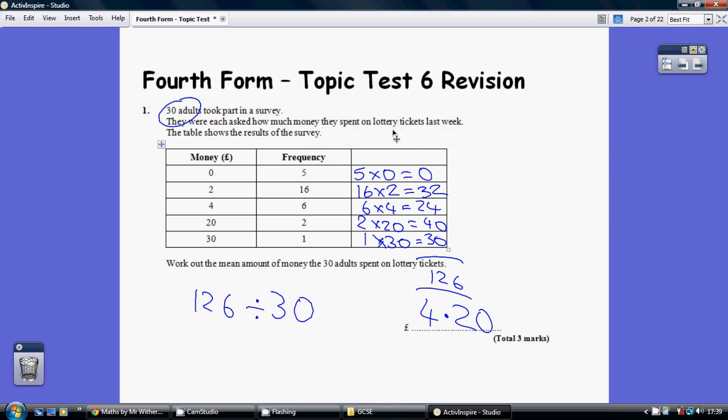To work out the mean amount of money the 30 adults spent on lottery tickets, you need to remember how this works. This is how often something happens, the frequency.